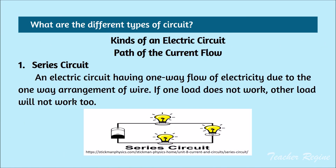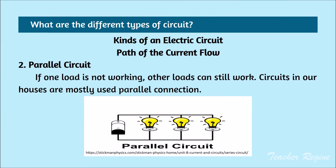Kinds of an electric circuit by path of the current flow. Number 1: Series circuit — an electric circuit having one-way flow of electricity due to the one-way arrangement of wire. If one load does not work, other loads will not work too. Number 2: Parallel circuit — if one load is not working, other loads can still work. Circuits in our houses are mostly used in parallel connection.